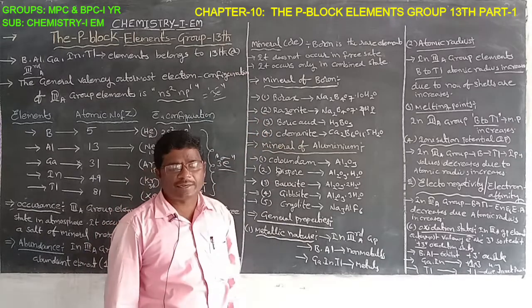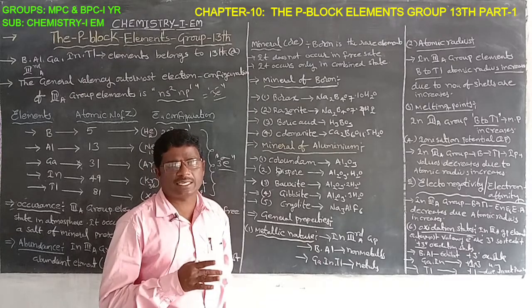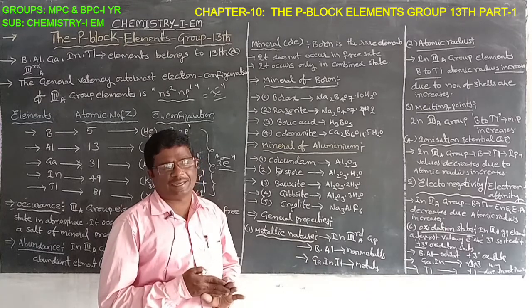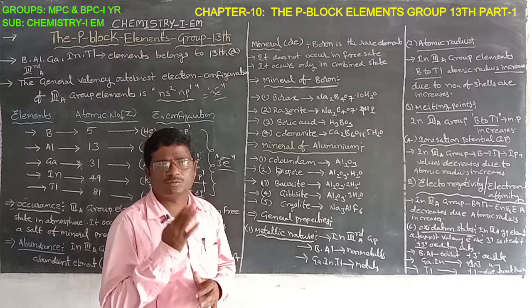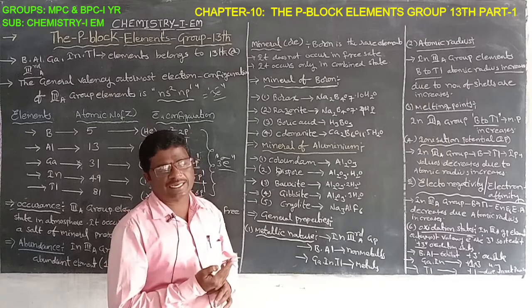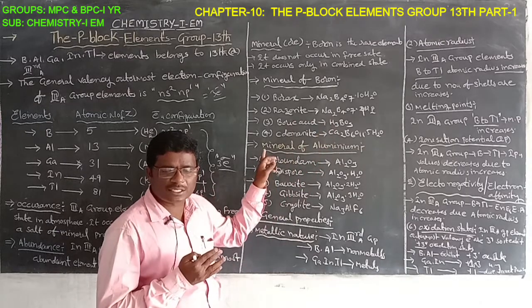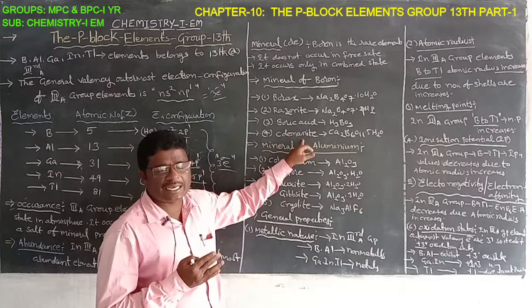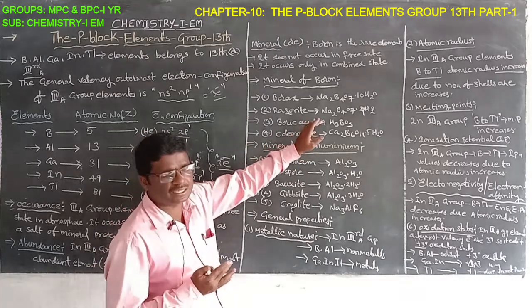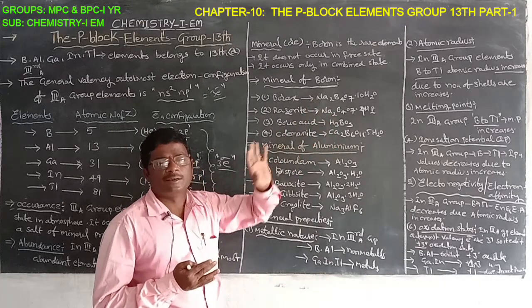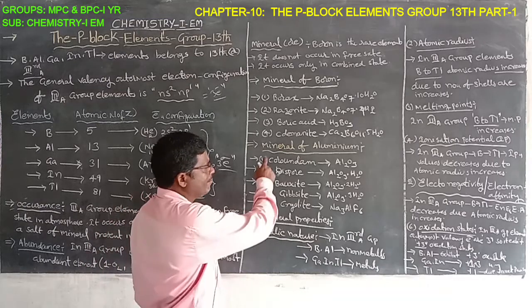Recap of boron minerals: First — borax, Na₂B₄O₇·10H₂O. Second — reserite, Na₂B₄O₇·4H₂O. Third — boric acid, H₃BO₃. Fourth — colemanite, Ca₂B₆O₁₁·5H₂O. These are the minerals of boron element.